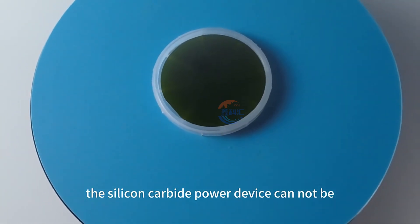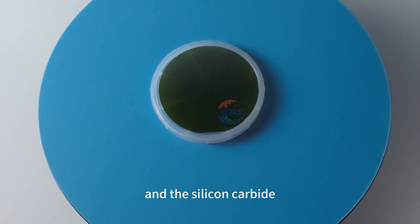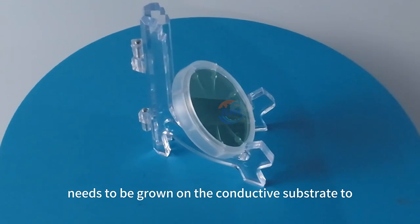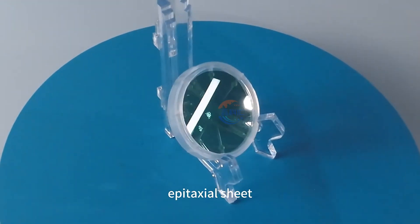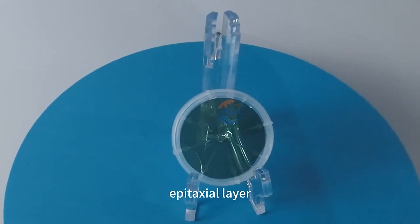The silicon carbide power device cannot be directly fabricated on the silicon carbide substrate, and the silicon carbide epitaxial layer needs to be grown on the conductive substrate to obtain the silicon carbide epitaxial sheet, and the various power devices are manufactured on the epitaxial layer.